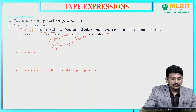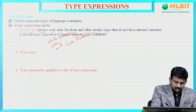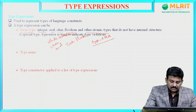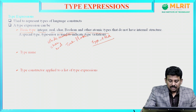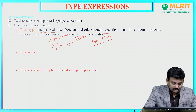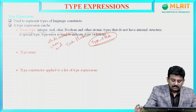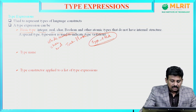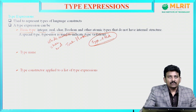Along with these basic types, we have another special type: type error. Type error is a special type used to indicate type violations in the program construct.